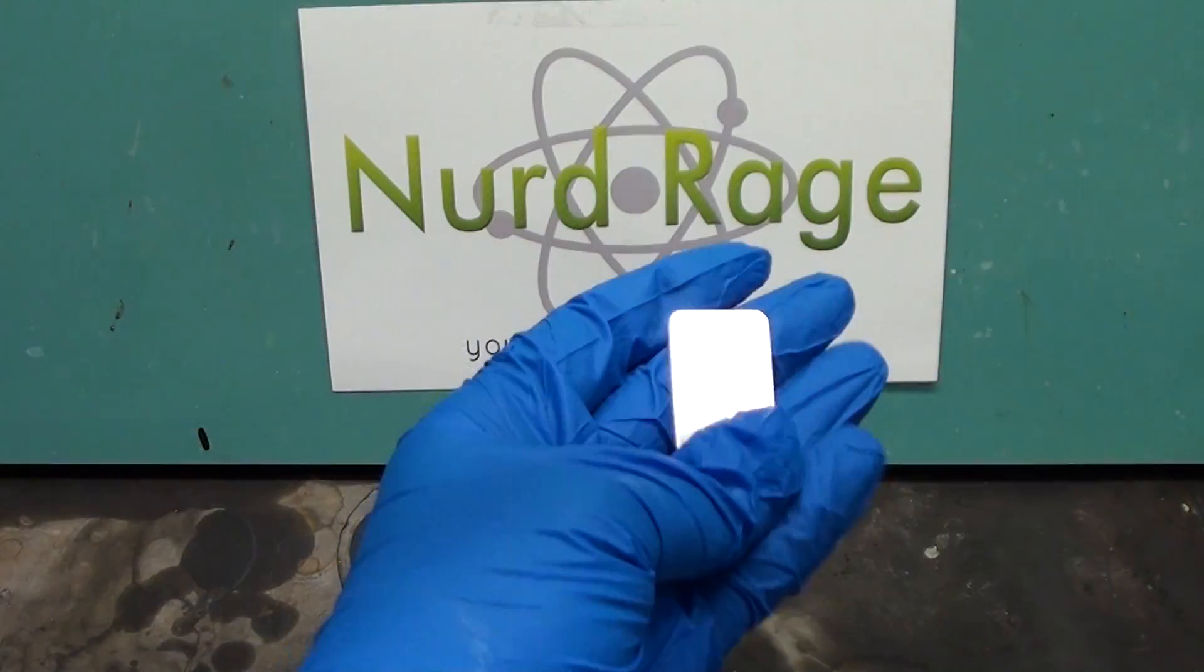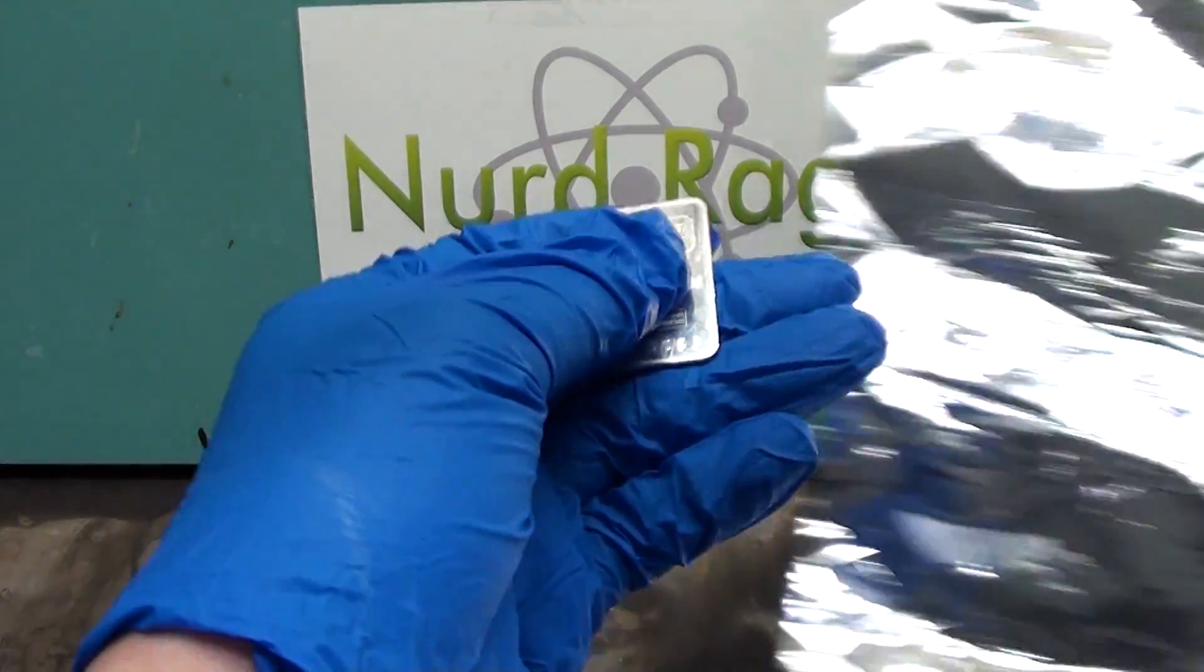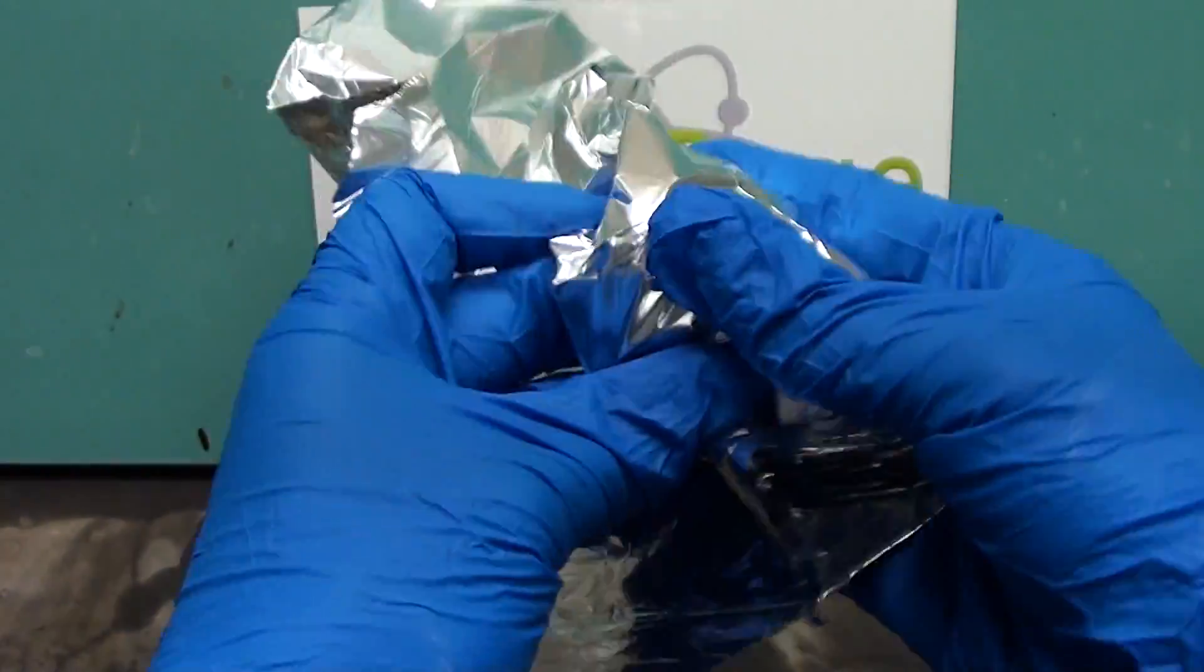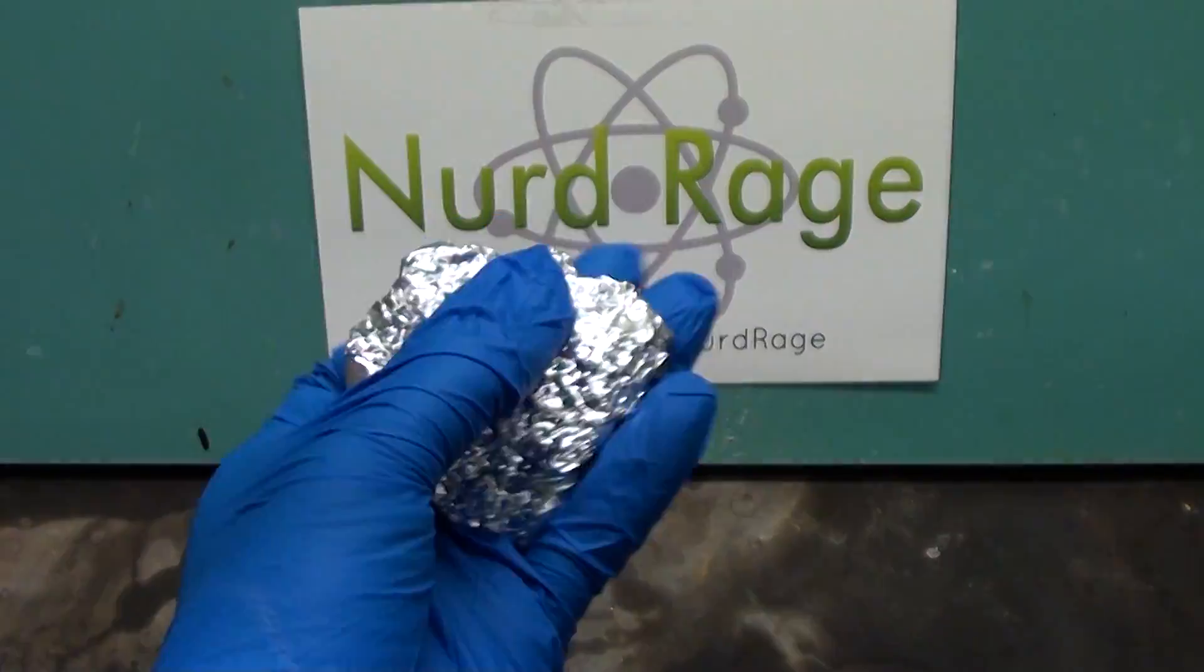Here I have a one troy ounce bar of platinum metal. The first test will be in hydrochloric acid, so I'm wrapping it in aluminum foil for comparison purposes.